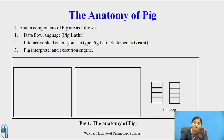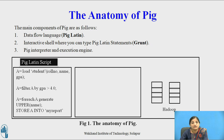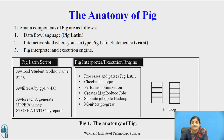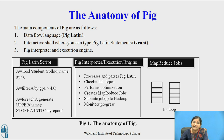Now let us see the anatomy of Pig. The main components of Pig are as follows. First is the data flow language — Pig Latin is called a data flow language because it allows users to design the reading of input from multiple sources, process the data, and store the results into multiple nodes. Second, it provides an interactive shell called the Grunt shell, where you can type Pig Latin statements. Third is the Pig interpreter and execution engine, which interprets the Pig Latin scripts and executes accordingly.